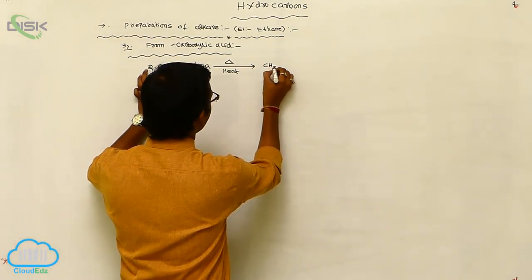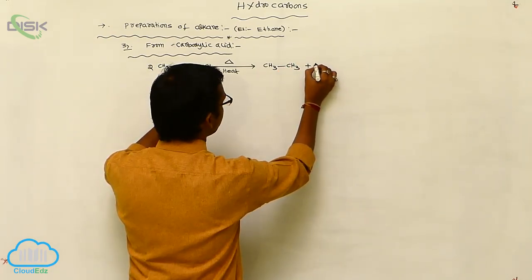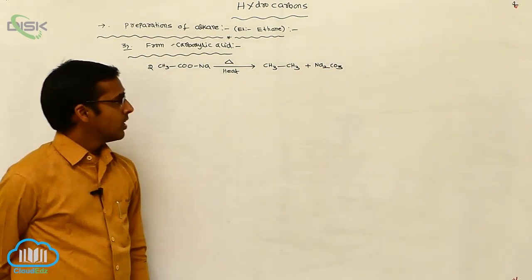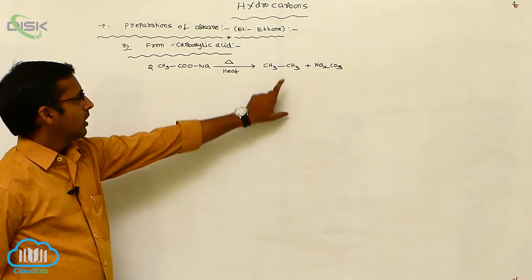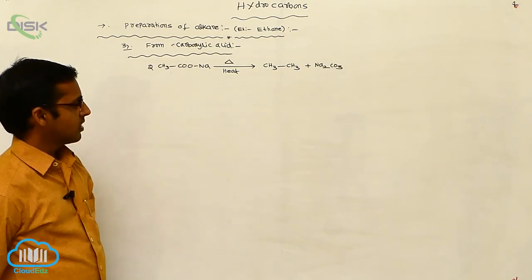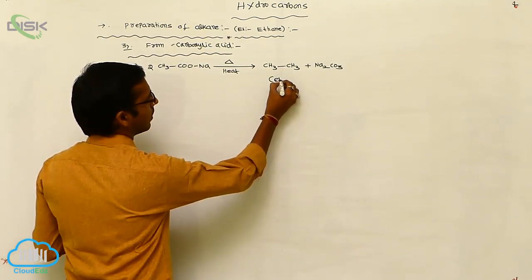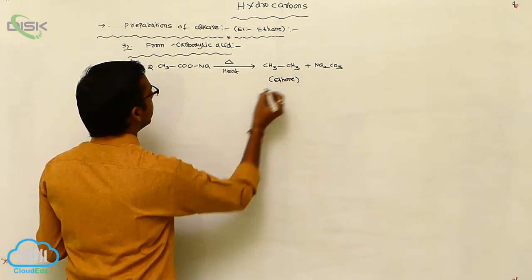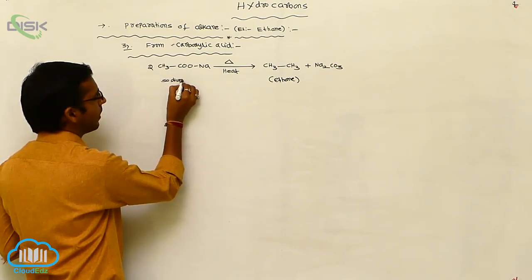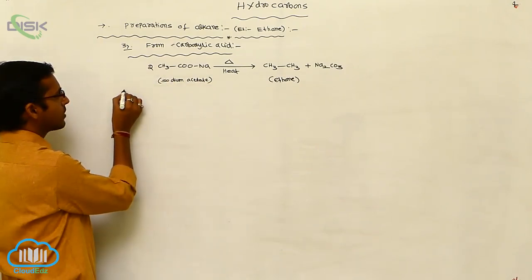Under thermal conditions, it generally produces 2 moles of ethane, and the elimination of Na and CO₂ gives sodium carbonate (Na₂CO₃). So the preparation of alkane from the sodium salt of carboxylic acid — sodium acetate — under thermal conditions gives ethane. This compound is called sodium acetate.